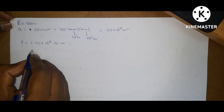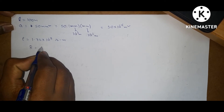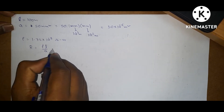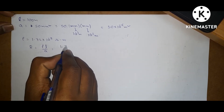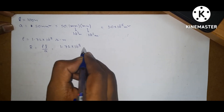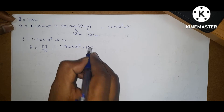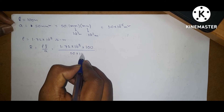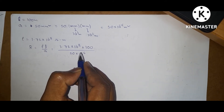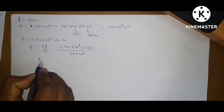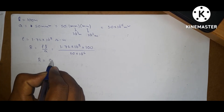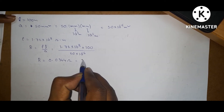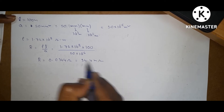The formula for resistance is R is equal to rho L by A. Substituting all values: rho is 1.72 into 10 power minus 8, length is 100, divided by area 50 into 10 power minus 6. Solving this, R is equal to 0.0344 ohms, which can be written as 34.4 milliohms.